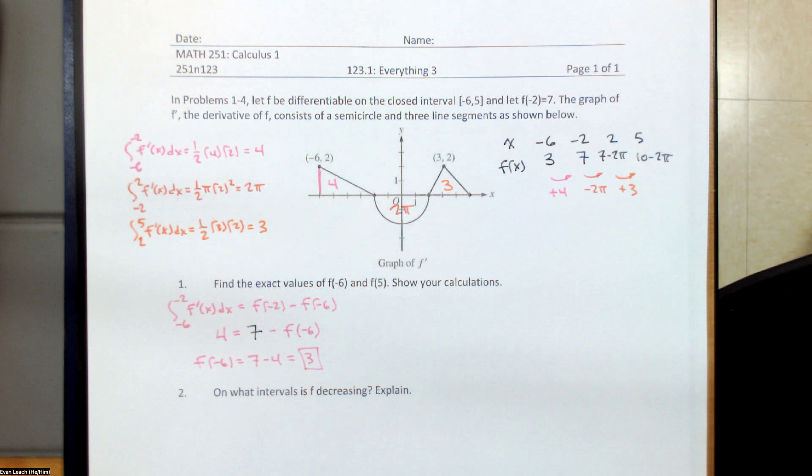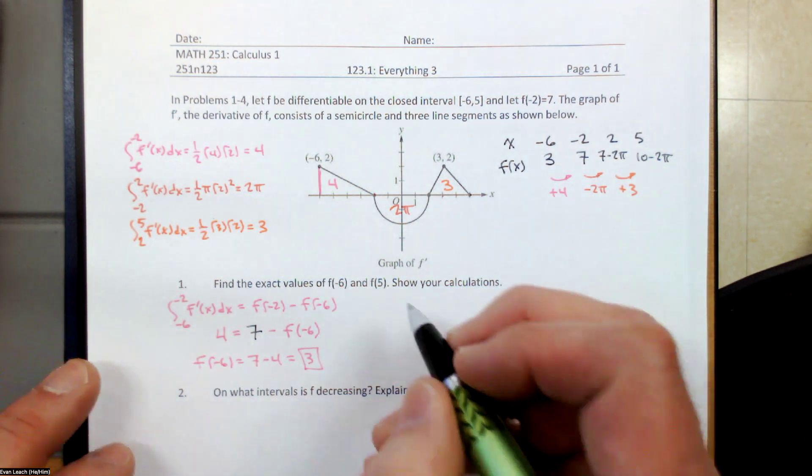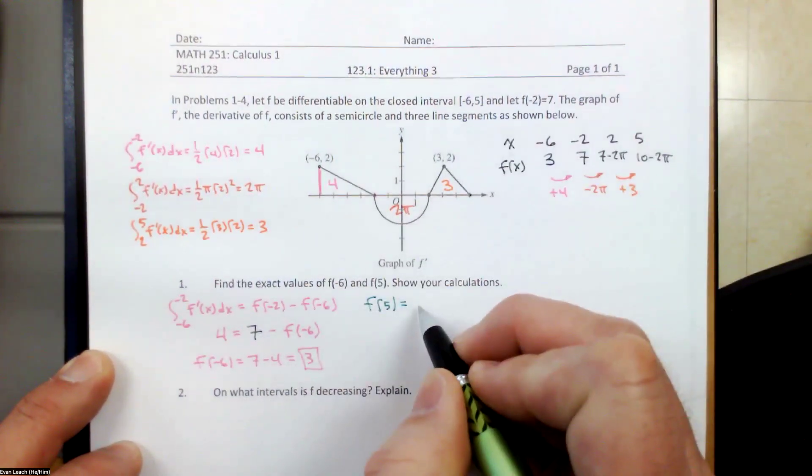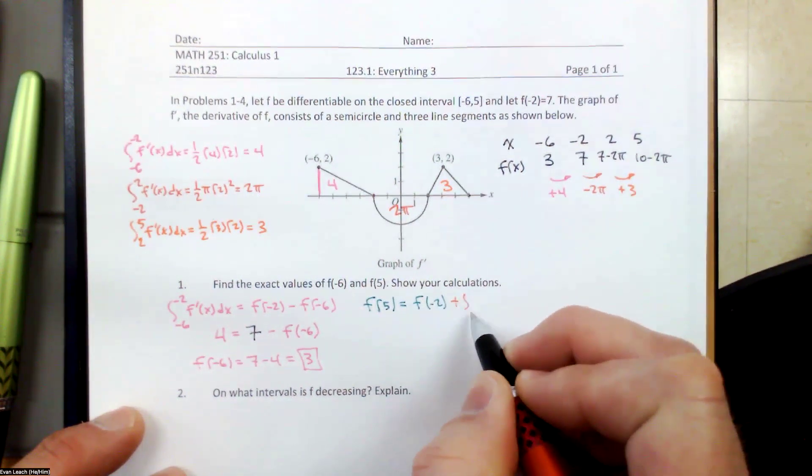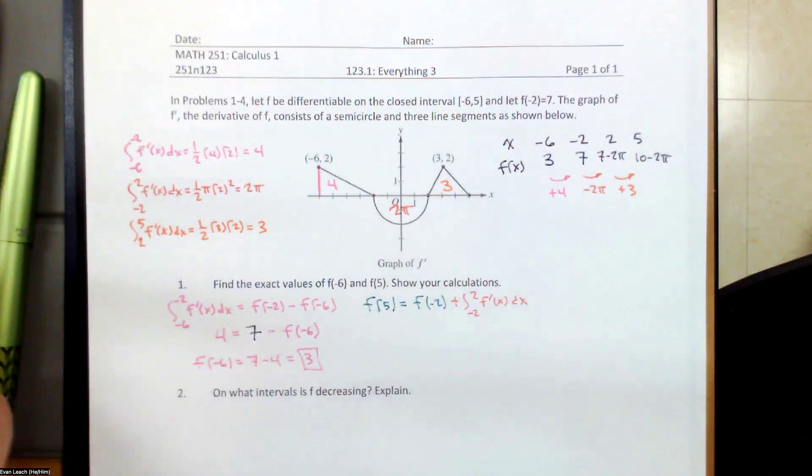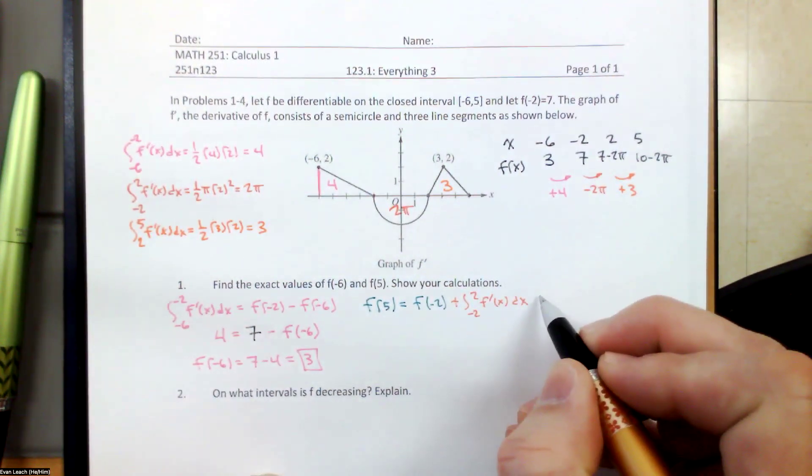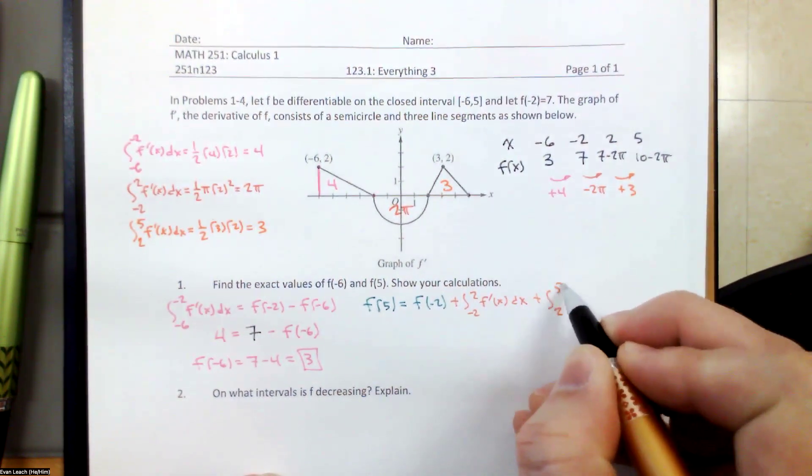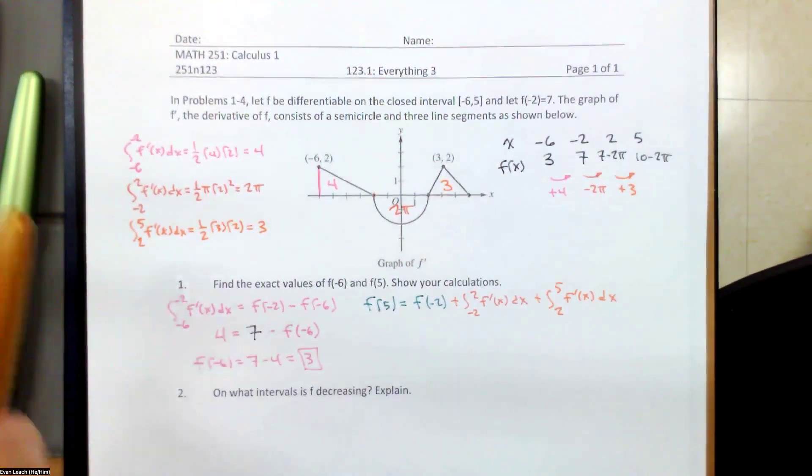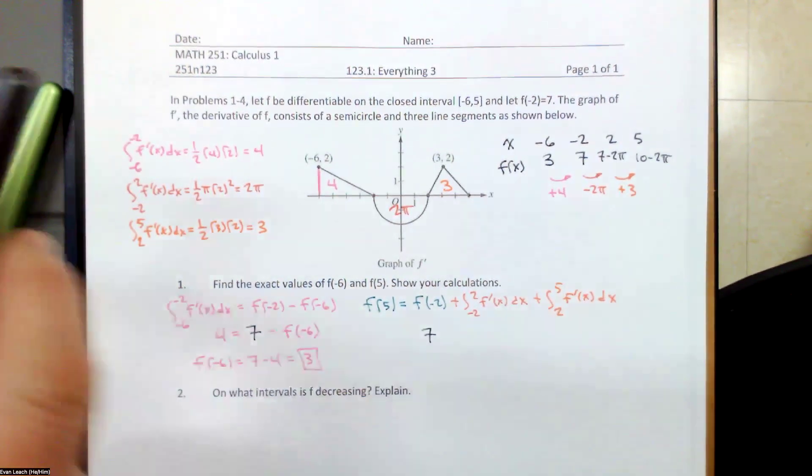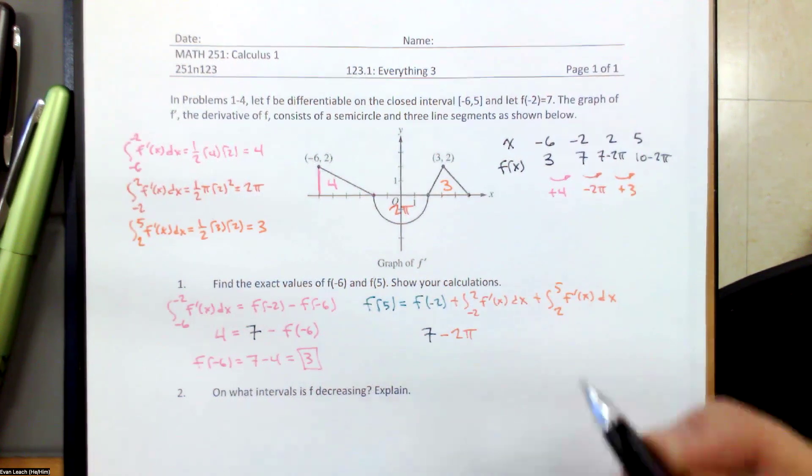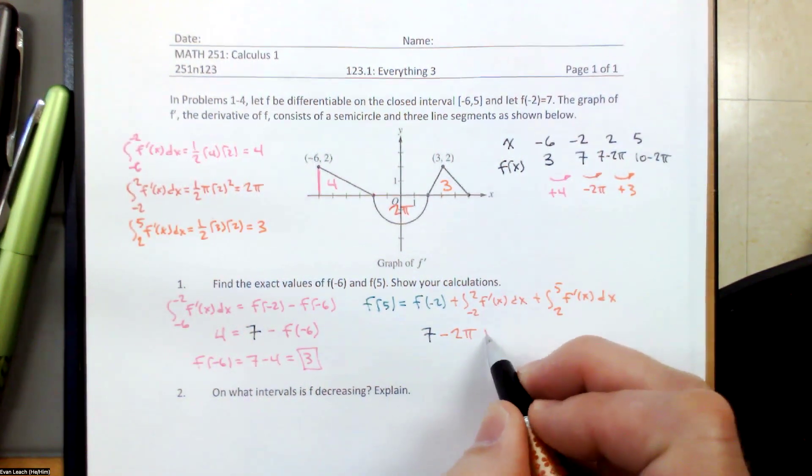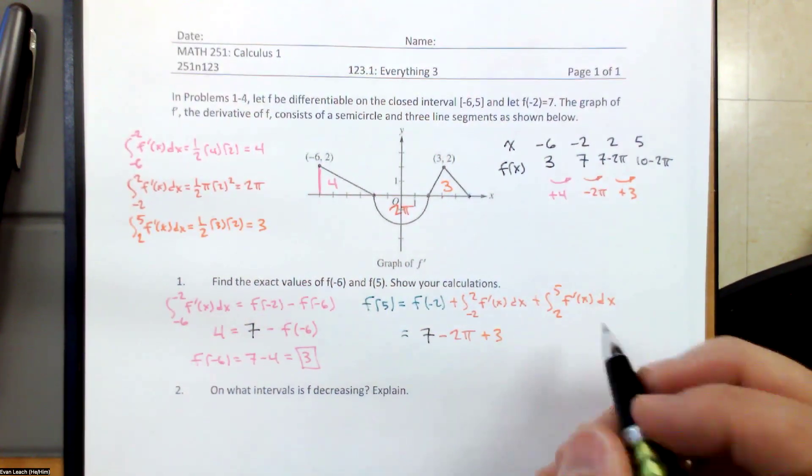For f of 5, the easiest thing to do would be to start with f of negative 2 and then just find the area up to 5. It's just adding those two regions. So f of 5, we'll start off at f of negative 2. Then we'll add the integral from negative 2 to 2 of f prime of x dx. That's the change in the function from negative 2 to 2. And then we can add the integral from 2 to 5 of f prime of x dx. f of negative 2 is given at 7. The integral from negative 2 to 2 of f prime of x dx is the signed area. And the integral from 2 to 5 is also the area. So here we are coming at it from the fundamental theorem of calculus standpoint.